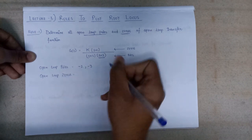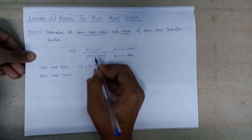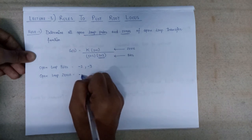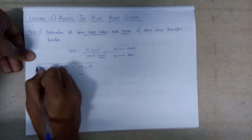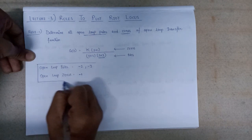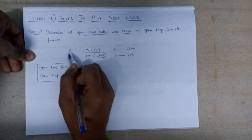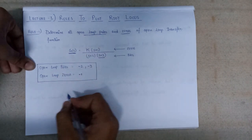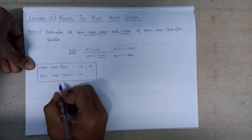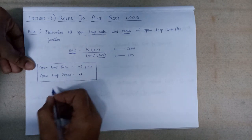The numerator (s+1)=0 gives s=-1, which serves as the open loop zero. So here there are two open loop poles and one open loop zero from this open loop transfer function G(s). Note that the open loop poles also serve as the starting point of the branches of root locus.